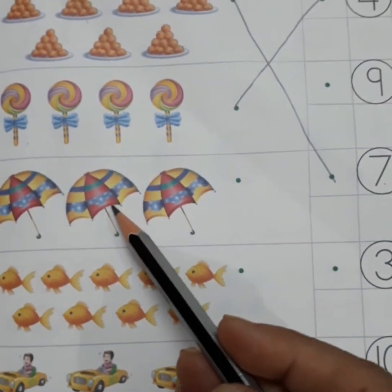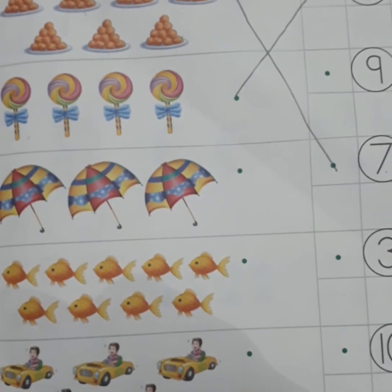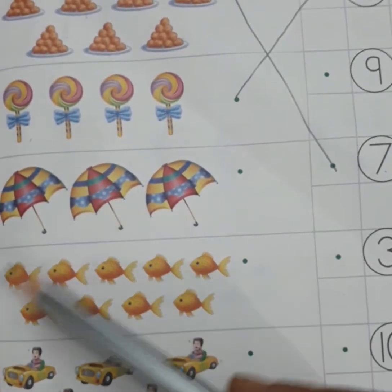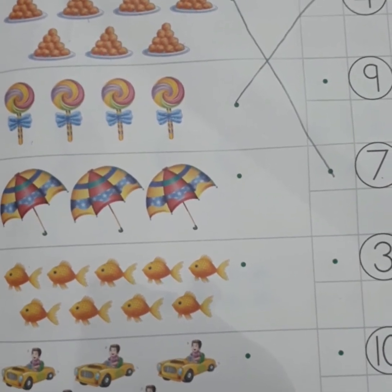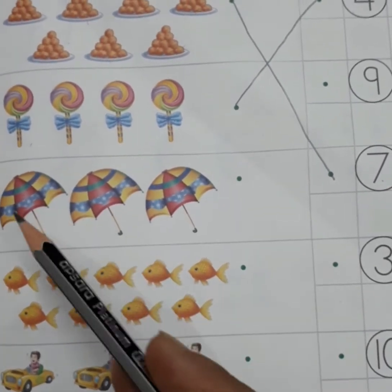Now, tell me, what are these? These are umbrellas. You use umbrella in rainy season. Now, you will count it. One.